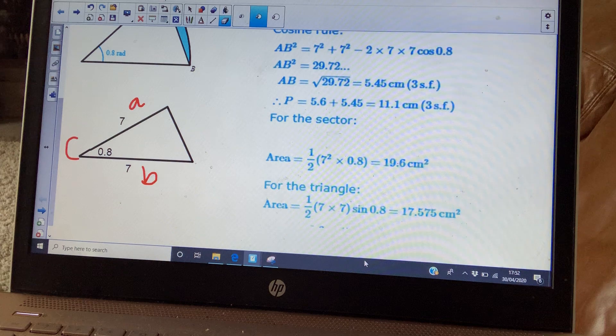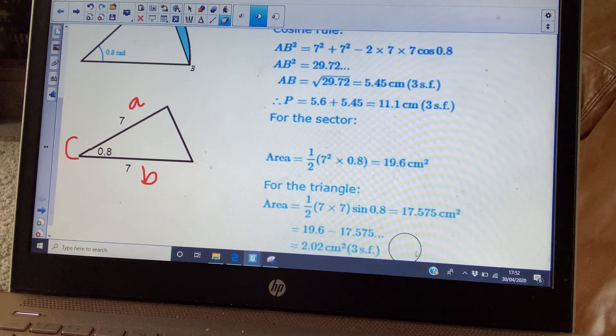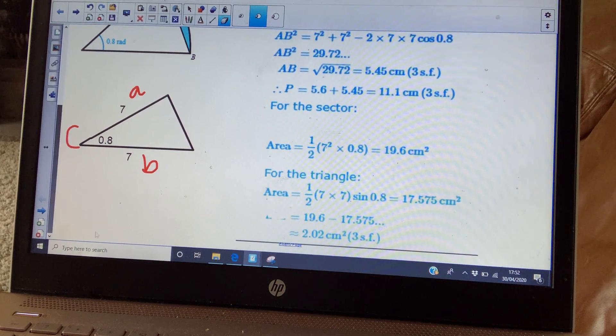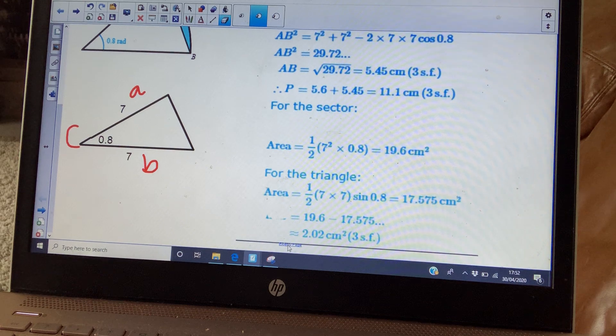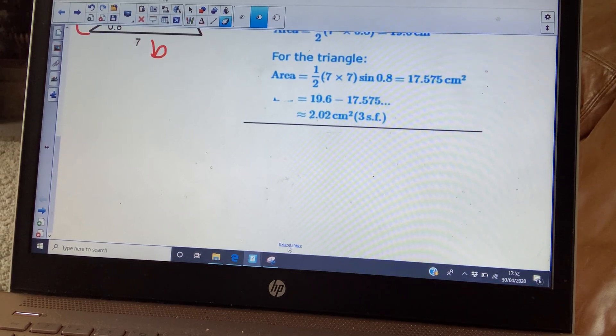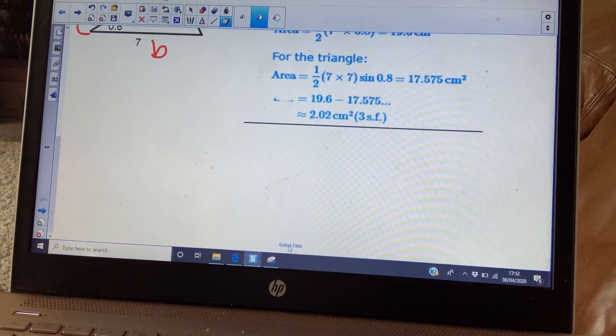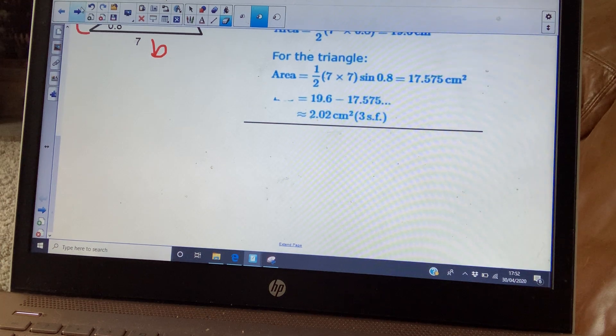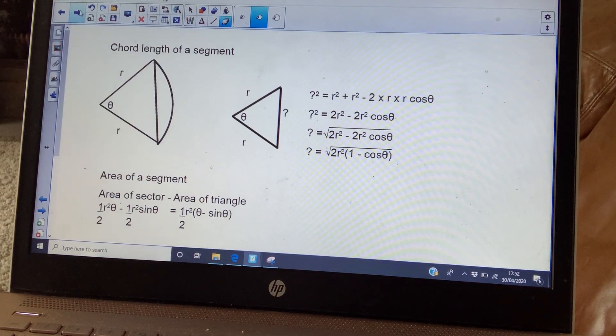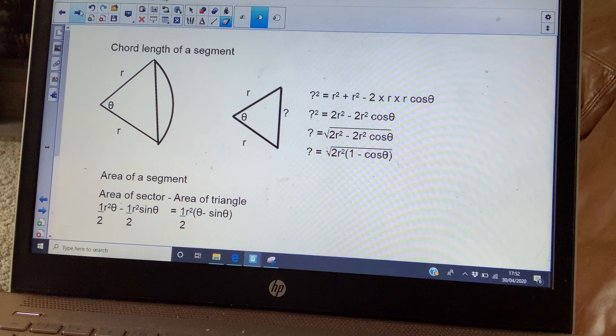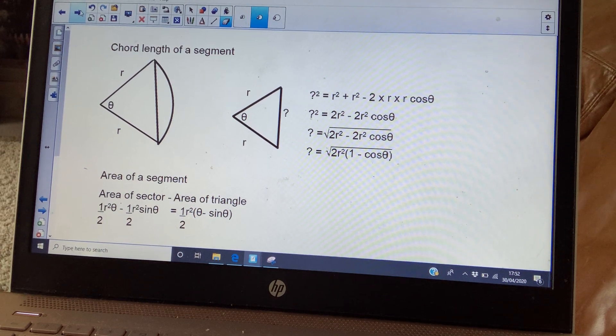And then you're just going to subtract them. So the area of your segment is going to be approximately 2.02 centimeters squared. Now, if you want, you can learn a formula to help you answer those.